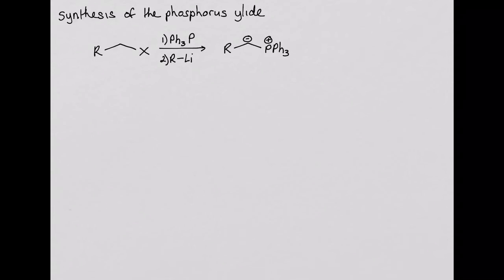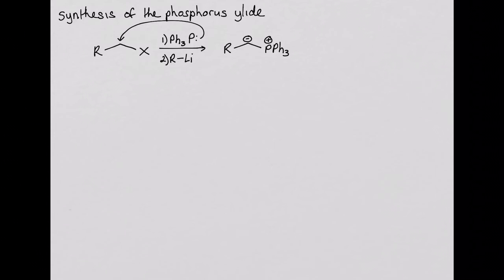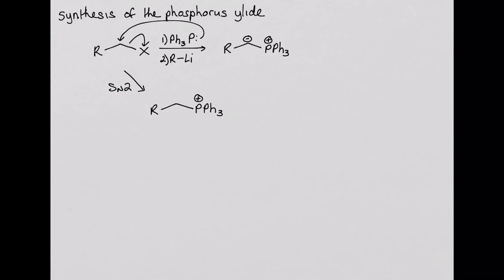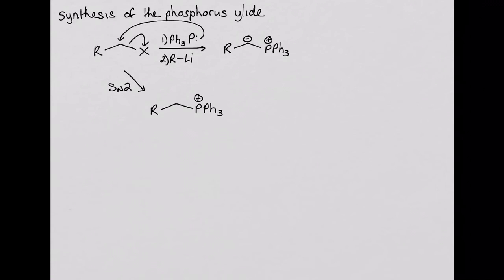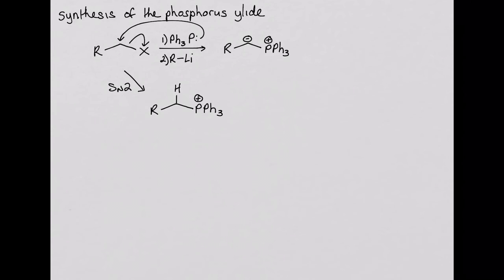Let's look at the mechanism. In the first step, the triphenylphosphine, which has a lone pair of electrons on the phosphorus, attacks the alkyl halide in an SN2 reaction. In the second step, the organolithium reagent is added. In addition to being a good nucleophile, organolithium reagents are very strong bases — strong enough to deprotonate the carbon next to the positively charged phosphorus. This forms the carbanion.